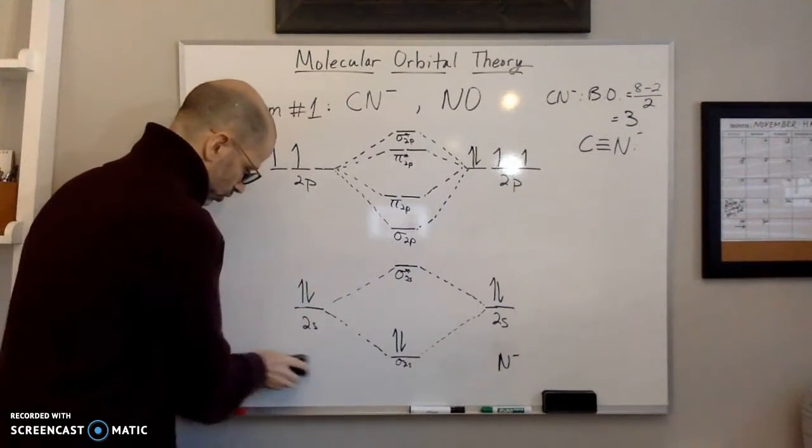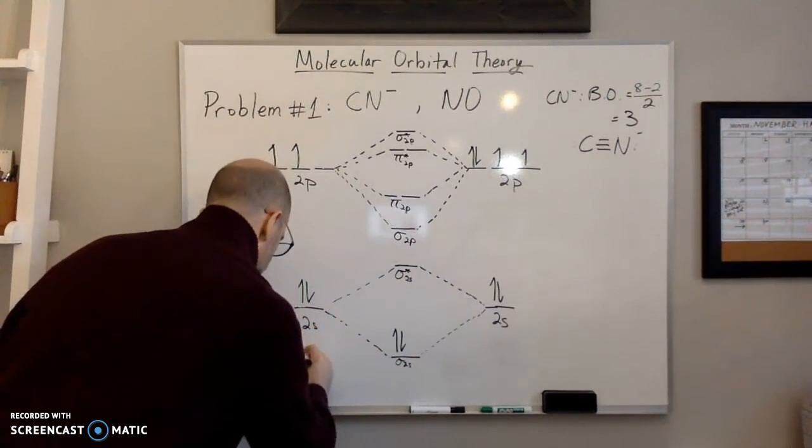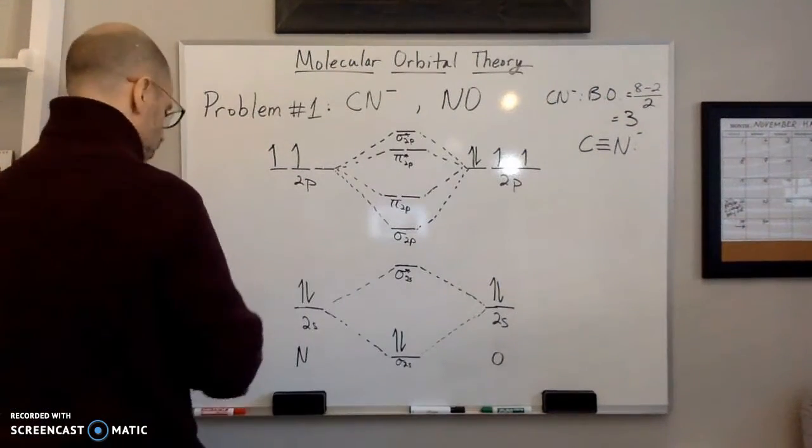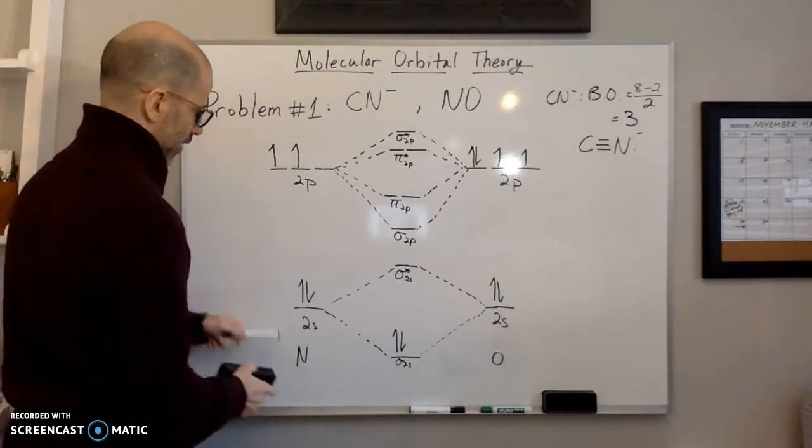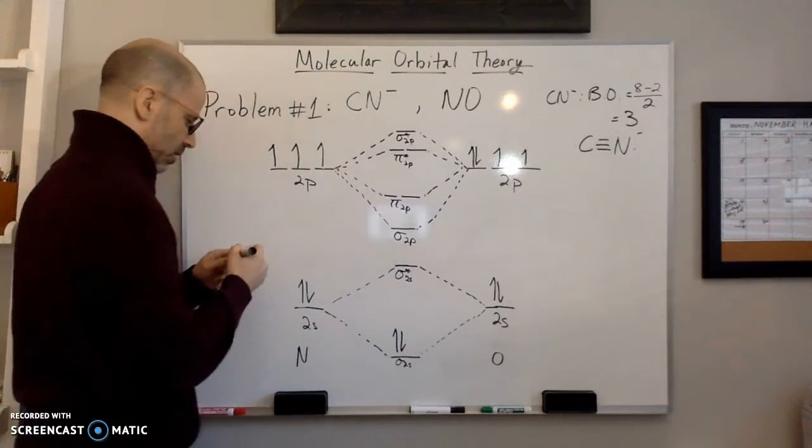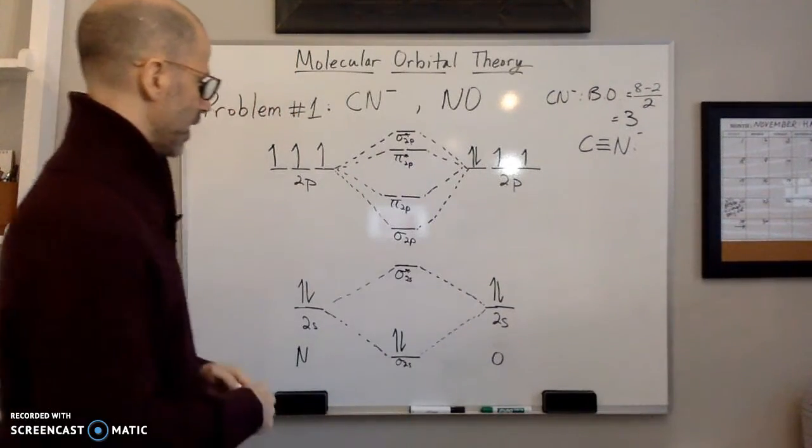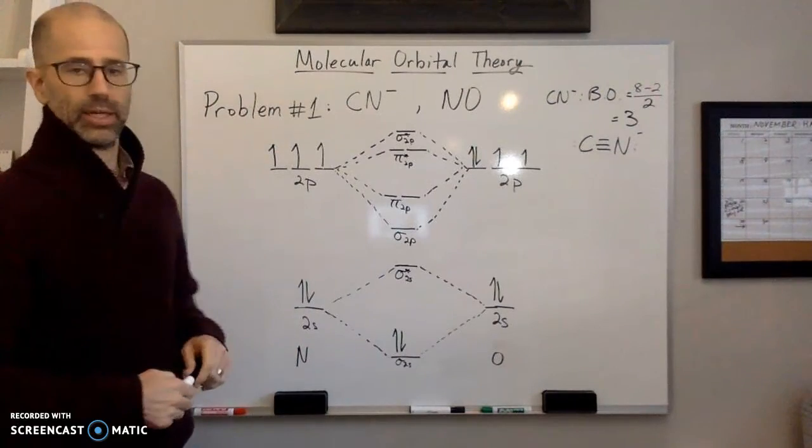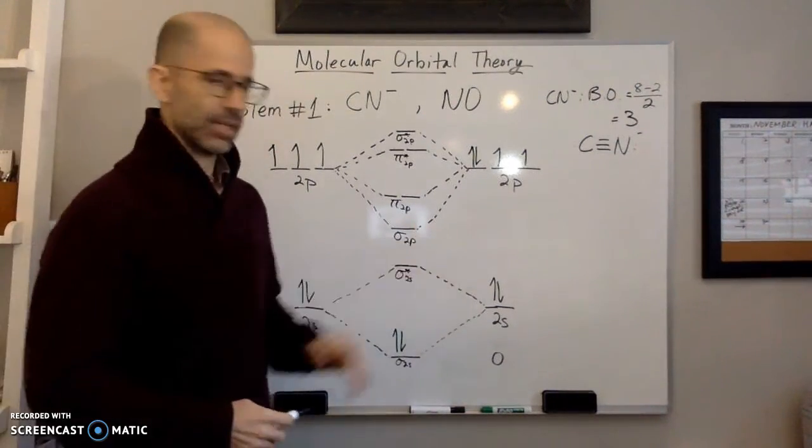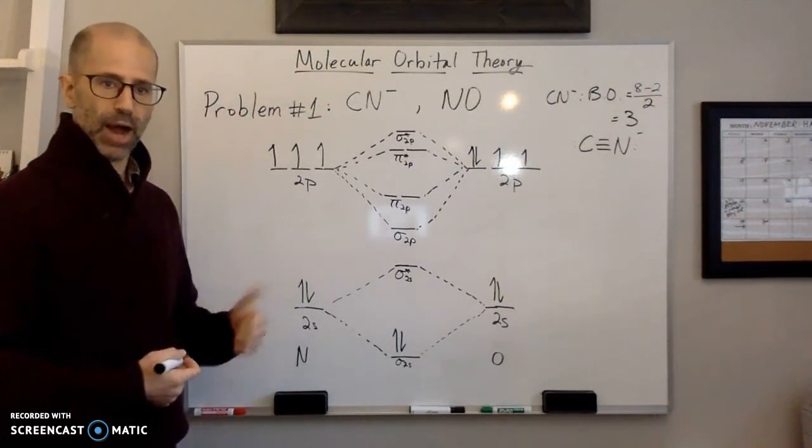So we'll change this around. So we'll make this side N and this side O. And so N has 5 valence electrons. So we'll put a fifth one in there. And oxygen has 6. So we can keep this the same. So now all we need to do is take the number here. We have 5 and we have 6. That's 11.